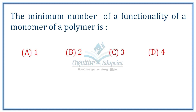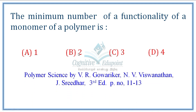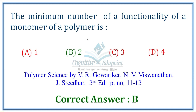Question on minimum number of functionality of a monomer: A polymer monomer should react with two other molecules. The minimum functionality required for a monomer to form a polymer is two. For example, ethylene has a double bond and can react with two other molecules — that is why its functionality is two. This refers to the number of reactive sites a molecule can react with, not simply functional groups. Minimum functionality required is two.